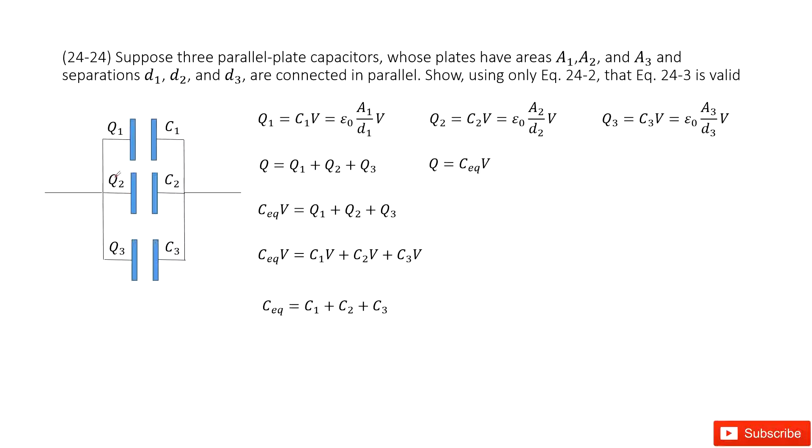In this system, we have three parallel connected capacitors: C1, C2, C3. Their parameters like A1, A2, A3 and separations D1, D2, D3 are given. Now we need to prove the equivalent capacitance for this parallel connection equals to this function. So how can we do that?